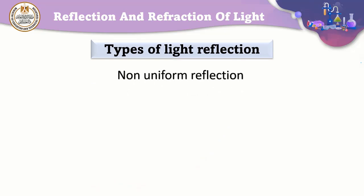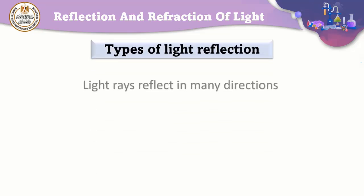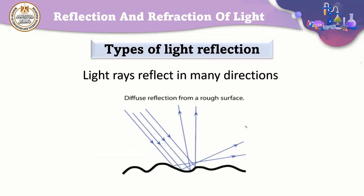The second type of reflection is non-uniform reflection. In this case, the reflecting surface is rough, like a piece of wood. All beams of light fall parallel to each other in one direction, but the reflected rays reflect in many directions. The reflection occurs in many directions because the surface is rough, not smooth, such as a piece of wood or a leather piece.